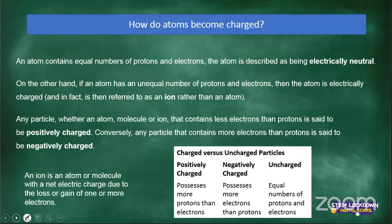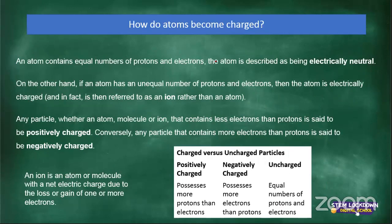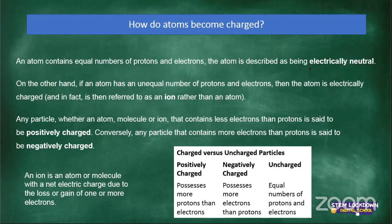How do atoms become charged? An atom contains an equal number of protons and electrons — you learned this in our previous lesson. When protons and electrons are equal, we say the atom is electrically neutral. There is a balance.